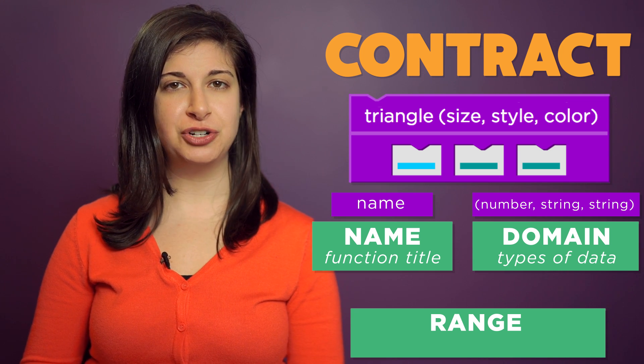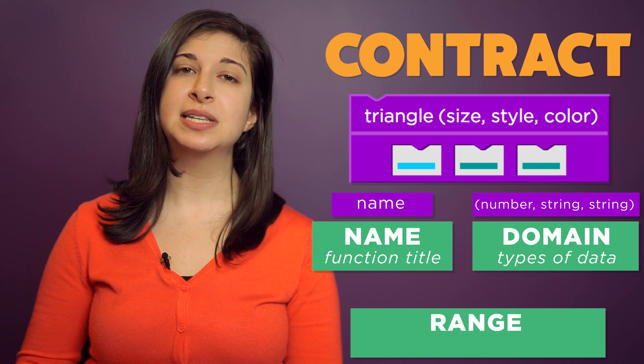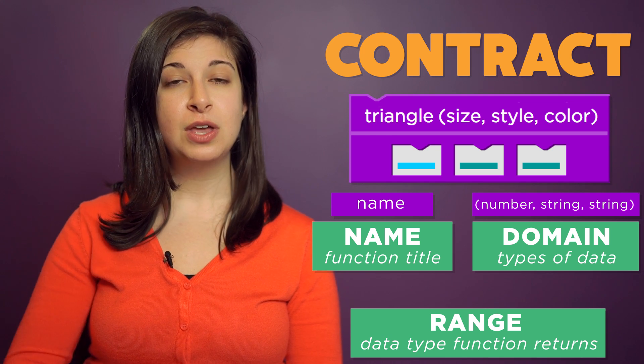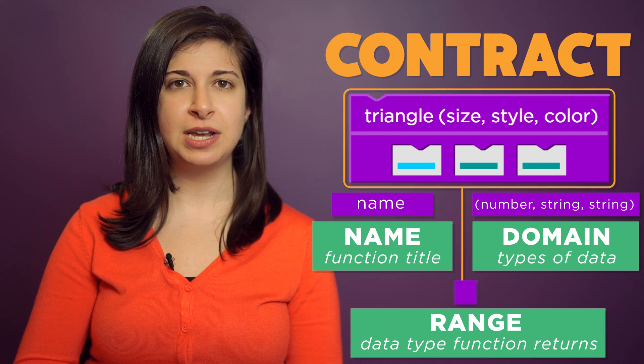The final element of our contract is the range, which tells us the data type that a function returns. The triangle function has a range of image.